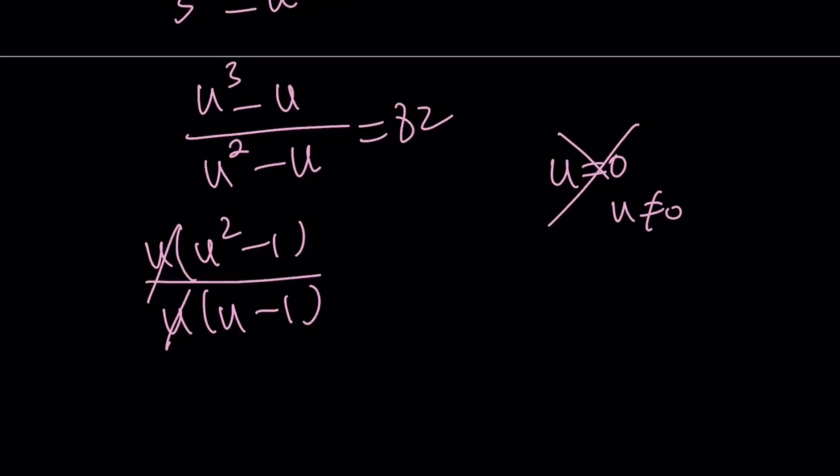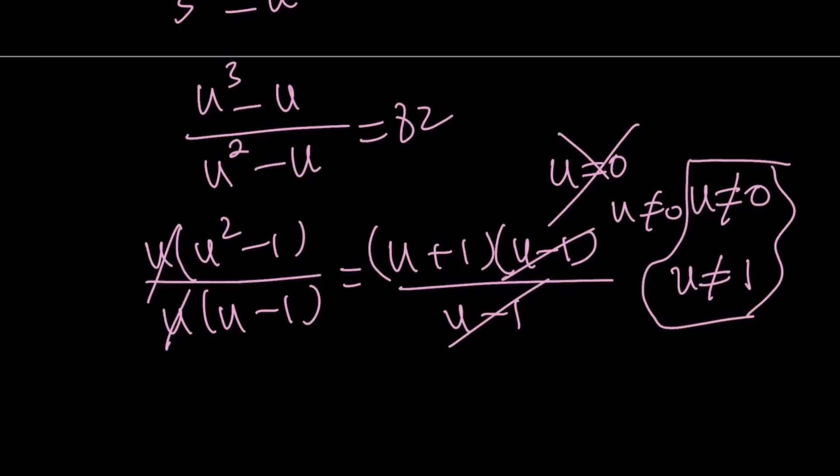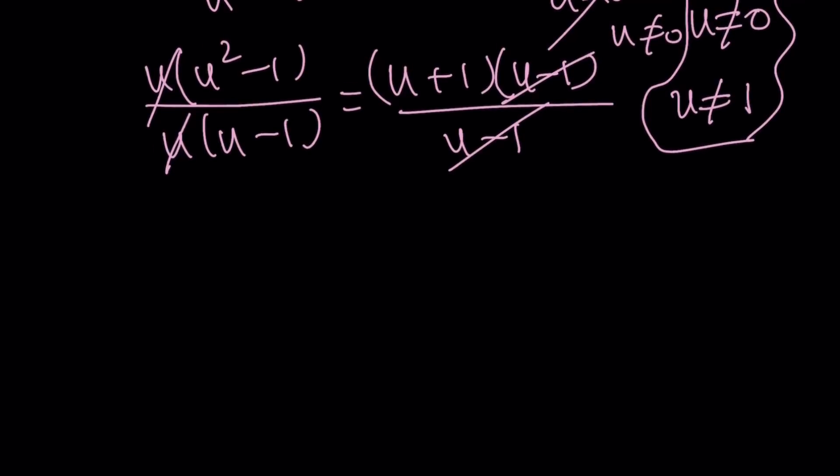And under that condition, we get the following. Difference of two squares can be factored. Yay. Another yay. And now, this brings another implication. u minus 1 can be cancelled as long as u does not equal 1. So far, we want u does not equal 0 and u does not equal 1. Isn't that familiar? You've seen that before, right? There you go. So under those conditions, we get a very simple equation from here.